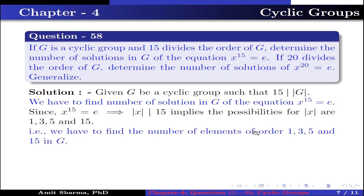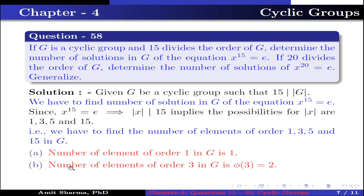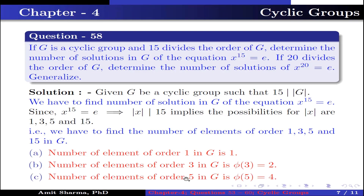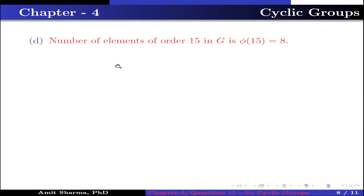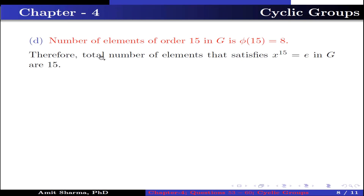We need to find the number of elements of order 1, 3, 5, and 15 in G. The number of elements of order 1 is 1. The number of elements of order 3 is φ(3), which is 2. The number of elements of order 5 is φ(5), which is 4. The number of elements of order 15 is φ(15), which is 8. Therefore, the total number of elements satisfying x¹⁵ = identity in G is 15.